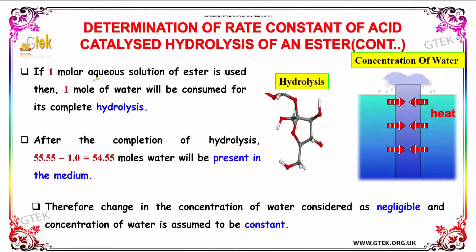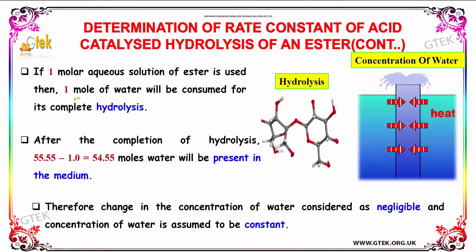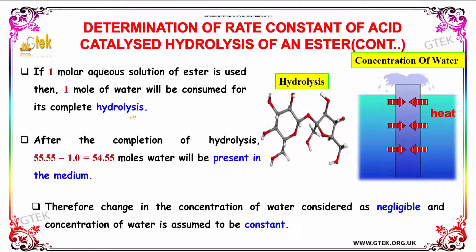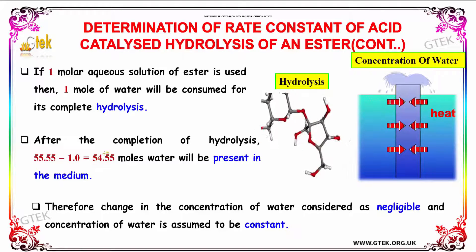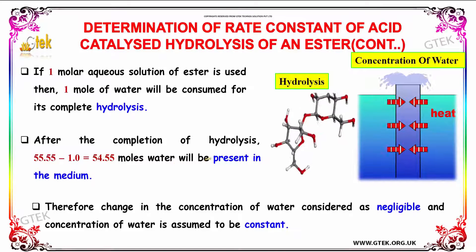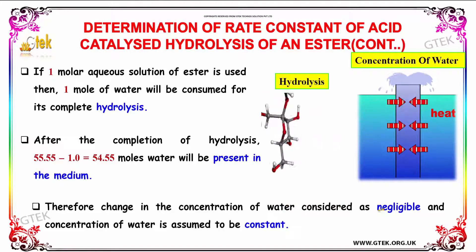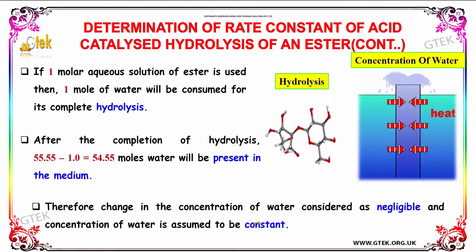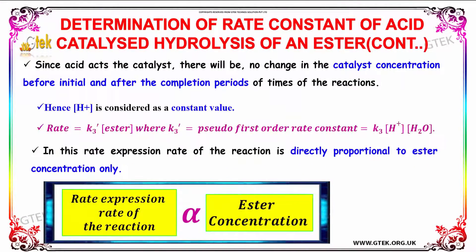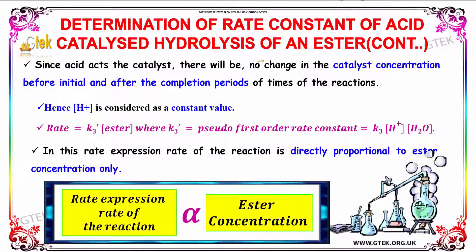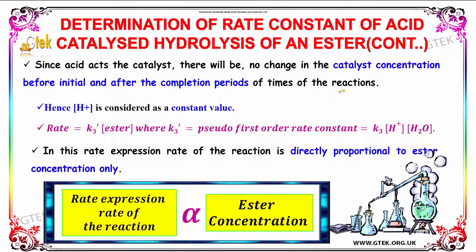If a one-molar aqueous solution of ester is used, then one mole of water will be consumed for its complete hydrolysis. After the completion of hydrolysis, 55.55 minus 1 equals 54.55 moles of water will be present in the medium. Therefore, the change in concentration of water is considered negligible and the concentration of water is assumed to be constant. The acid acts as the catalyst, so there will be no change in the catalyst's concentration before and after the completion of the reaction.